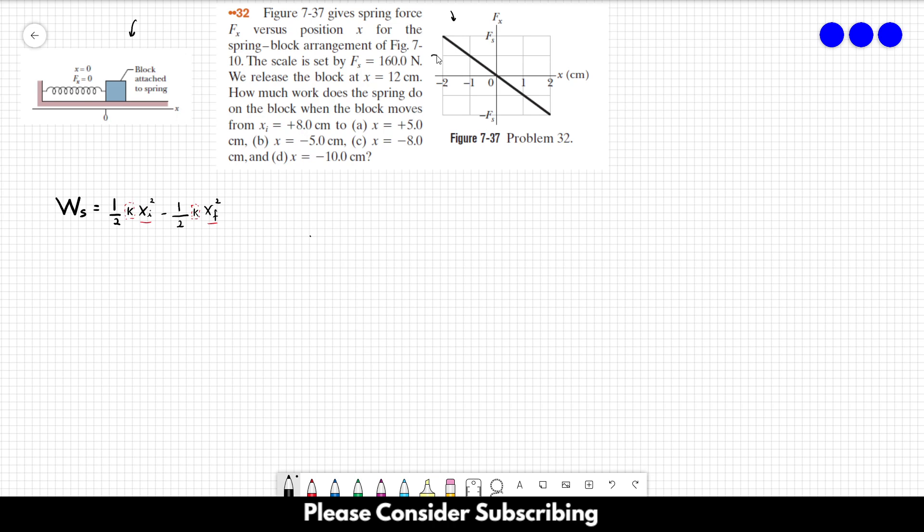Okay, so from this graph over here, we are going to get the spring constant. We are going to use Hooke's law, which is minus kx, right? So let's take a look at this point, for example, or this point, rather.